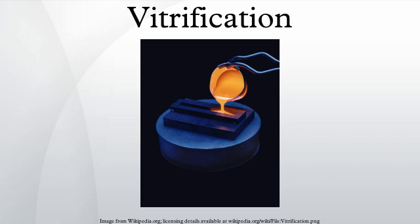Vitrification can also occur when starting with a liquid such as water, usually through very rapid cooling or the introduction of agents that suppress the formation of ice crystals. This is in contrast to ordinary freezing, which results in ice crystal formation. Additives used in cryobiology or produced naturally by organisms living in polar regions are called cryoprotectants. Arctic frogs and some other ectotherms naturally produce glycerol or glucose in their livers to reduce ice formation.